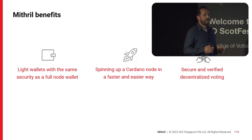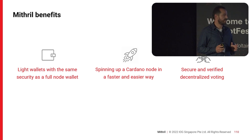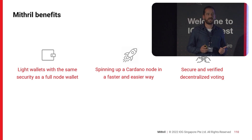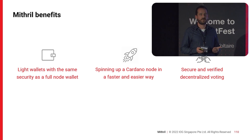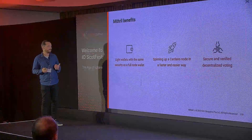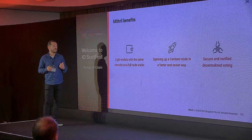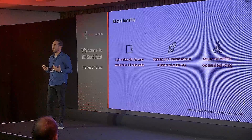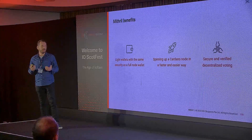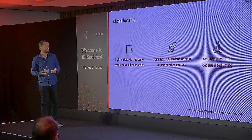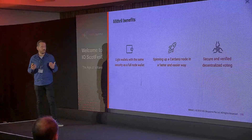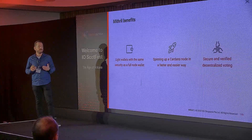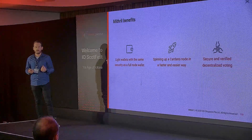To summarize the Mithril benefits: the first is to get light wallets with the same security as full node wallets. The second is to be able to spin up a Cardano node easier and faster. And the last is to power secure and verifiable decentralized voting.